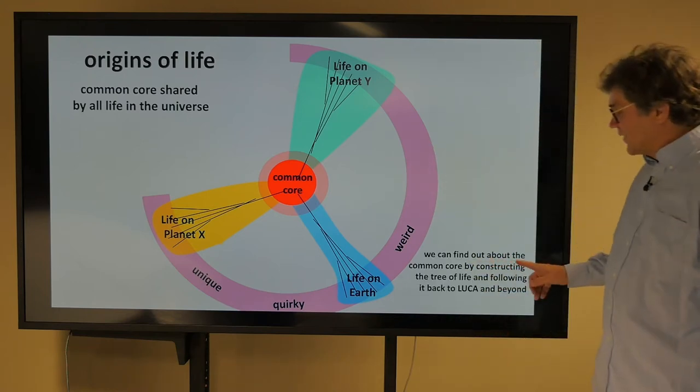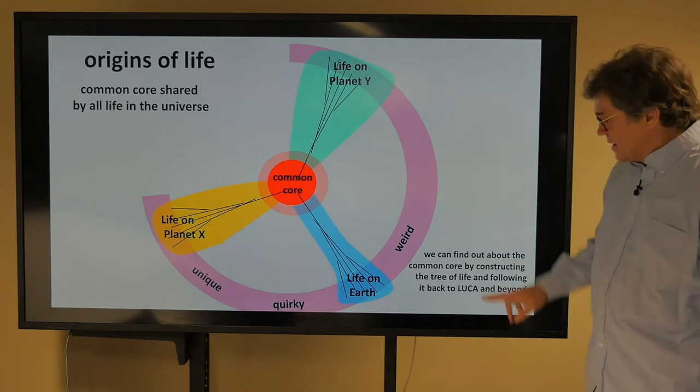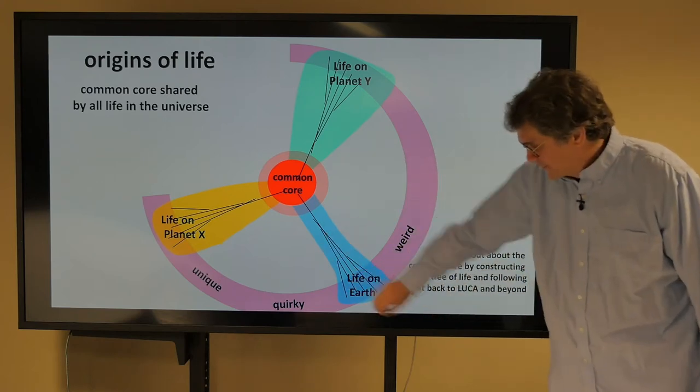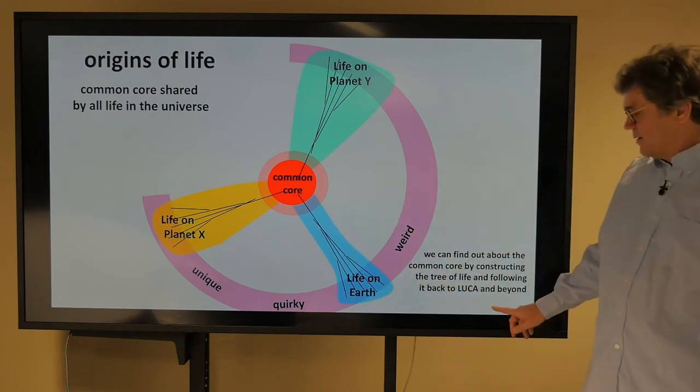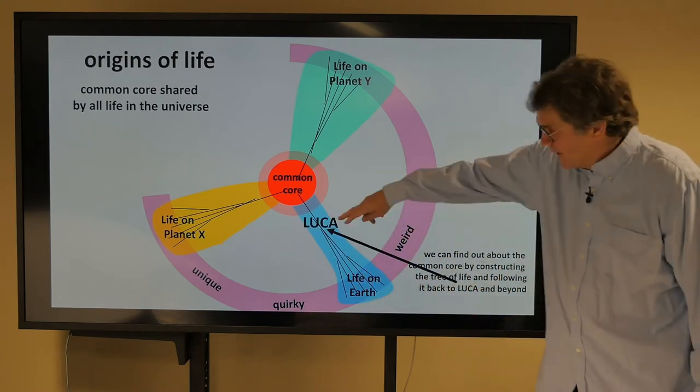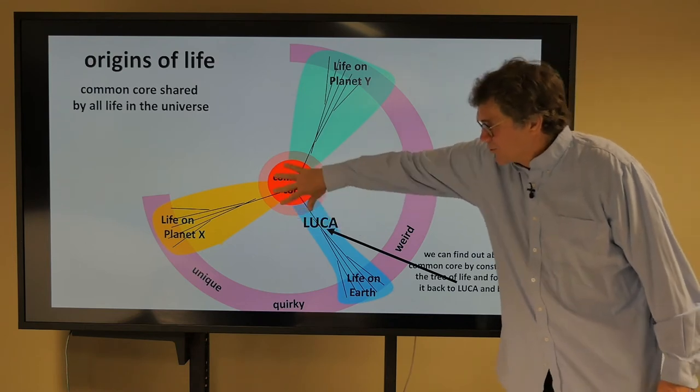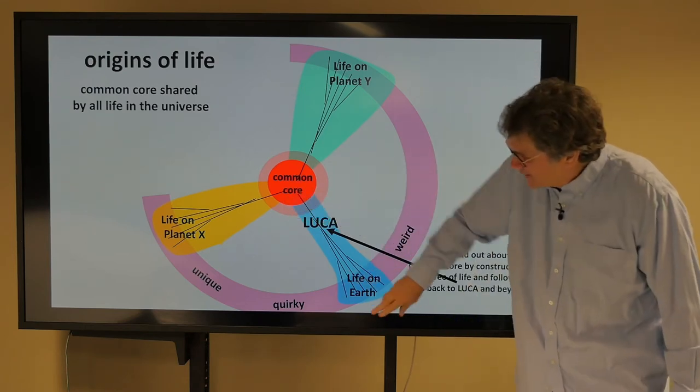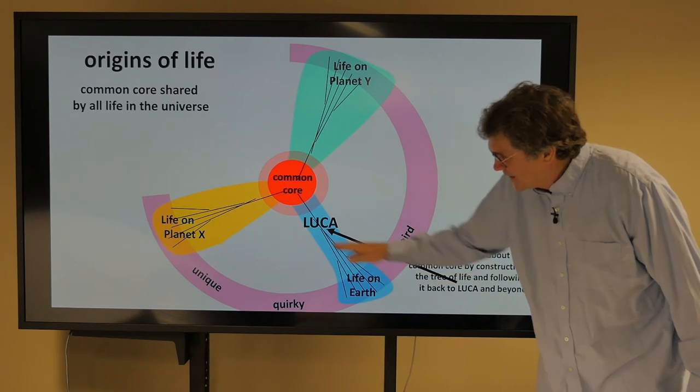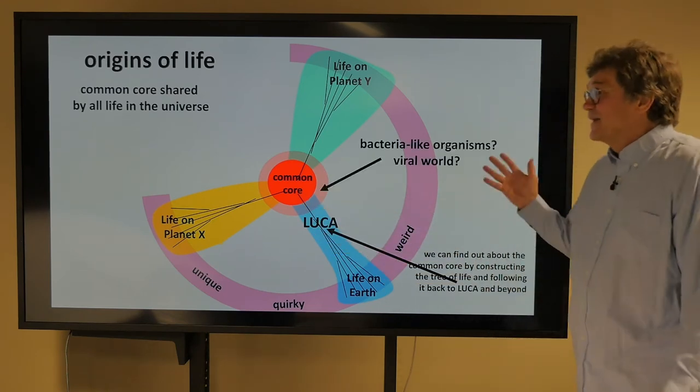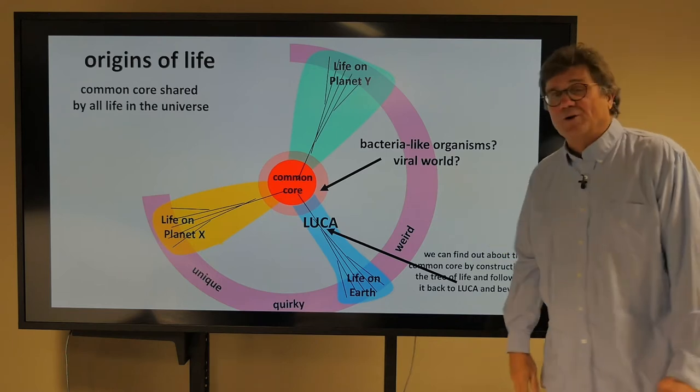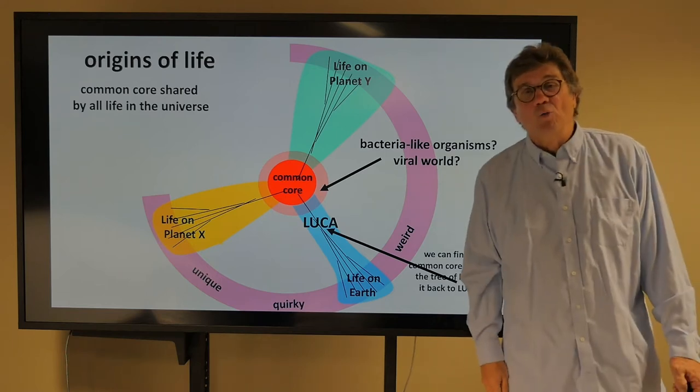So we can find out about the common core by constructing the tree of life that's here, and following this tree of life back to LUCA and beyond. So there's LUCA, and here's beyond to the origin. And we're trying desperately to figure out what are the features here that can get us back to here that can get us back to there. Maybe getting back to there, they're bacteria-like organisms, or maybe even a viral world.